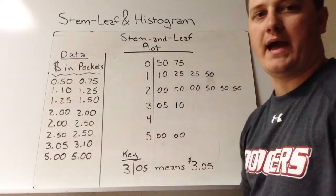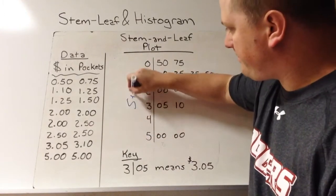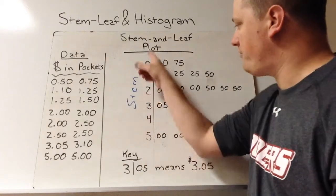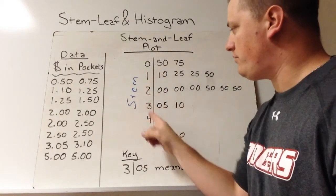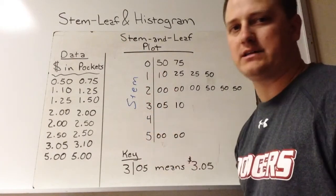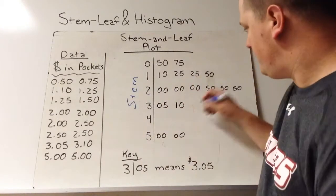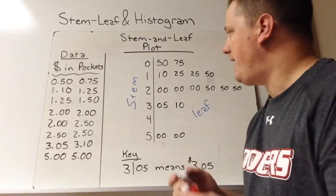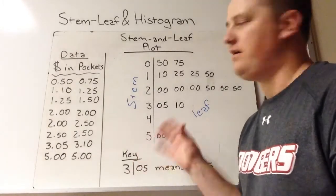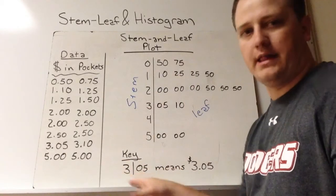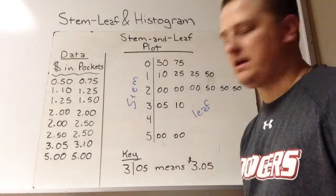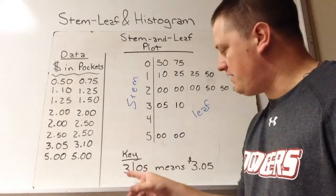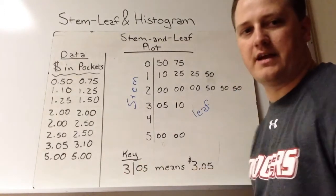On the left we have our stem, and these are the groupings. In this one, I've grouped by the dollar values: zero, one, two, three, four, or five dollars. On the right are our leaves — these are all the cents that go with each dollar. At the bottom, I have a key that explains what each thing means. So a three, line, zero-five is saying three dollars and five cents.